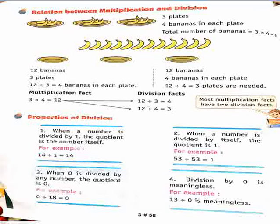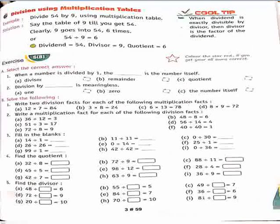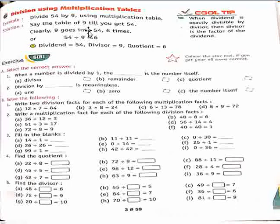Now comes the next page. Division using multiplication table. You can see here: divide 54 by 9 using the multiplication table. Say the table of 9 until you get 54.